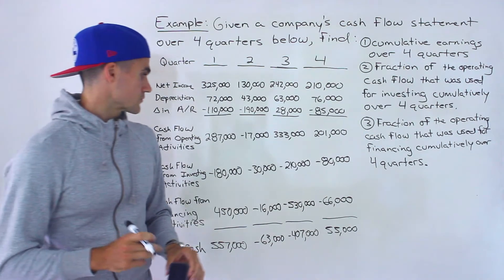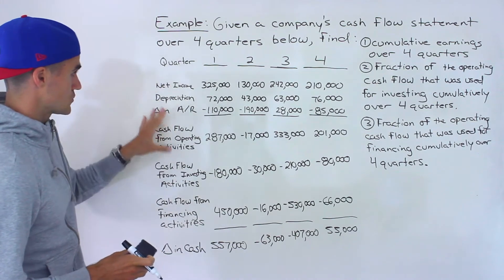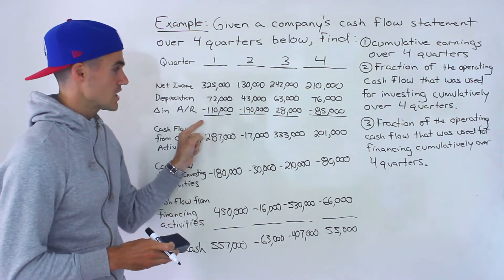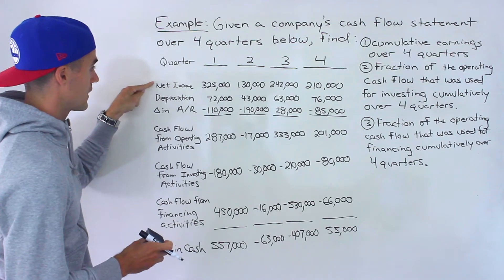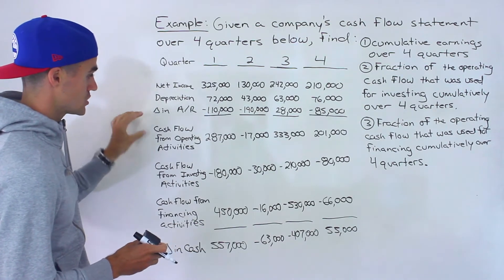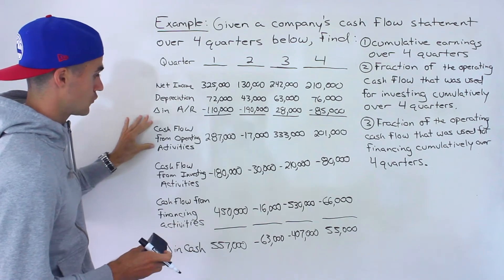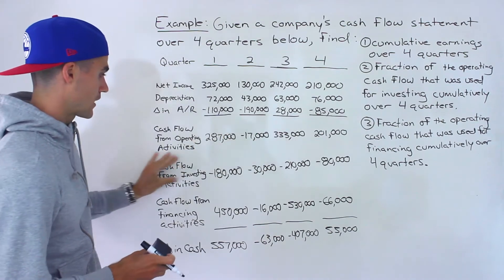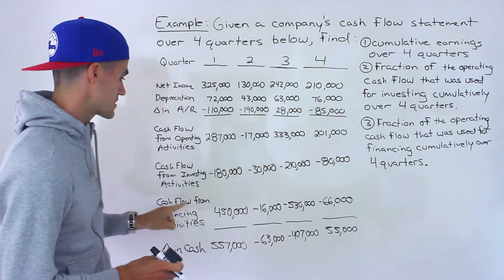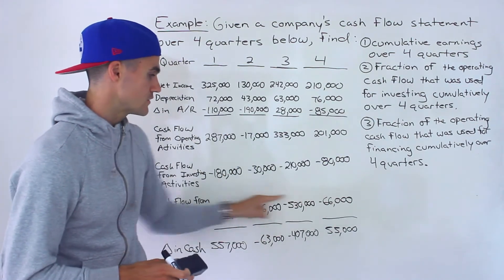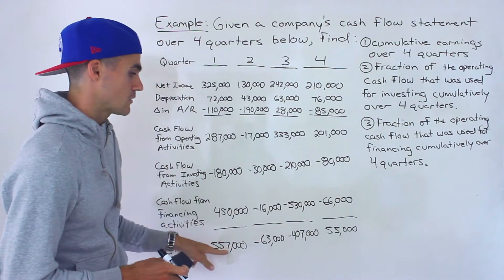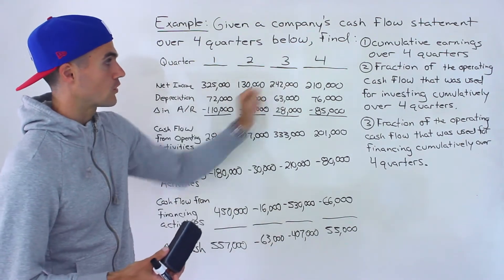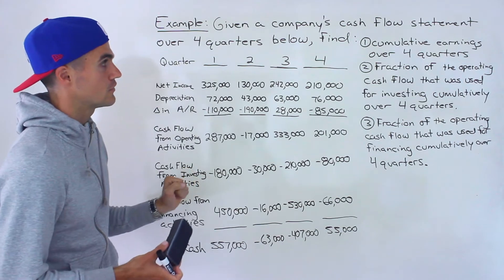Notice this is a cash flow statement here — it's an indirect cash flow statement. If you remember from accounting, we start with net income, add some changes, and then we get the cash flow from operating activities, which is here. Then we have the cash flow from investing activities, cash flow from financing activities, and then the respective change in cash. This is for four quarters of a year.